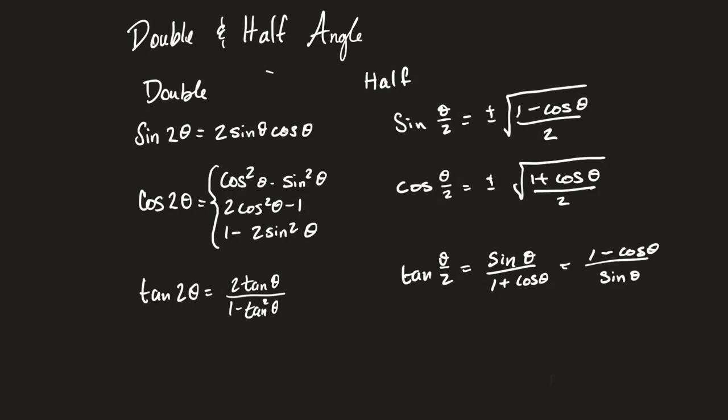Today we are going to look at the next set of trigonometric identities. Here we have the double and half angle identities. For these we are going to be using them in a lot of different ways.